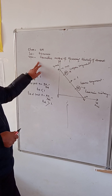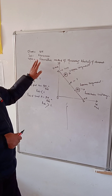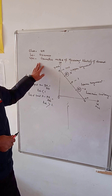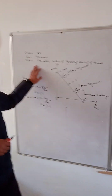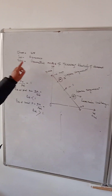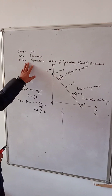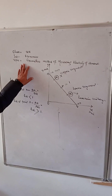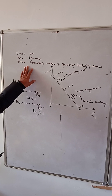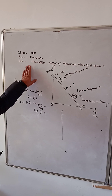Today we will discuss the topic of how we measure velocity of demand on a demand tool. This method is known as the metric method or point method of measuring velocity of demand.